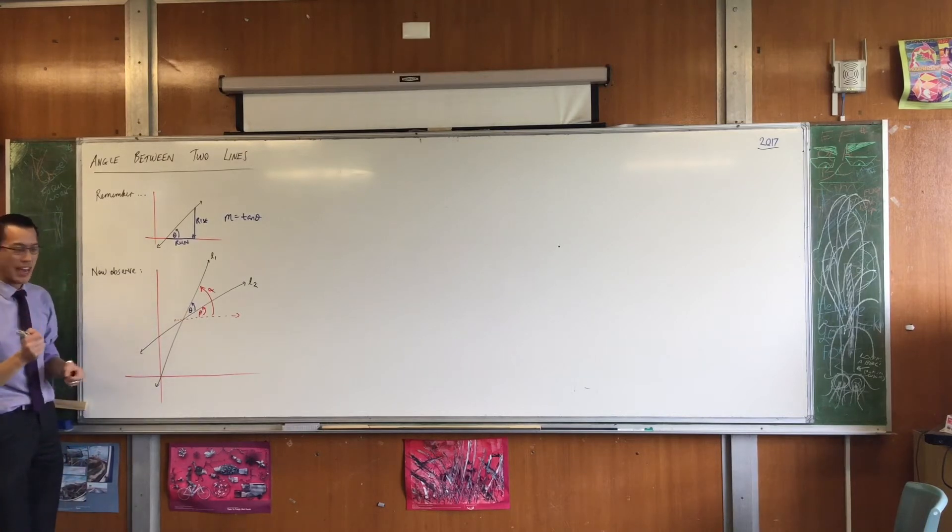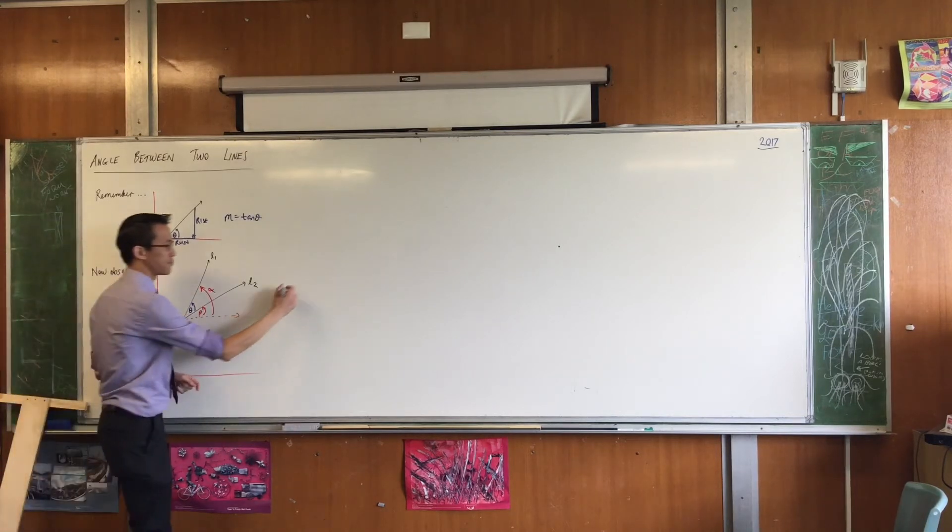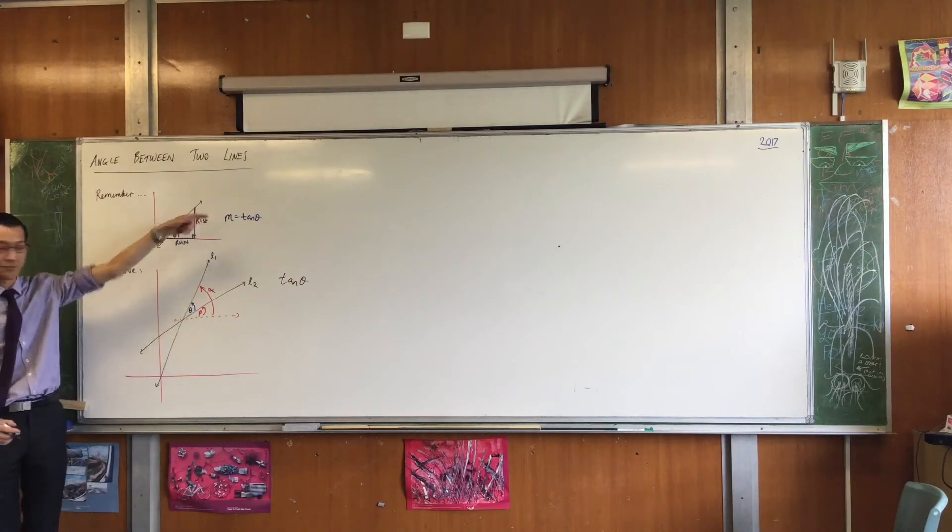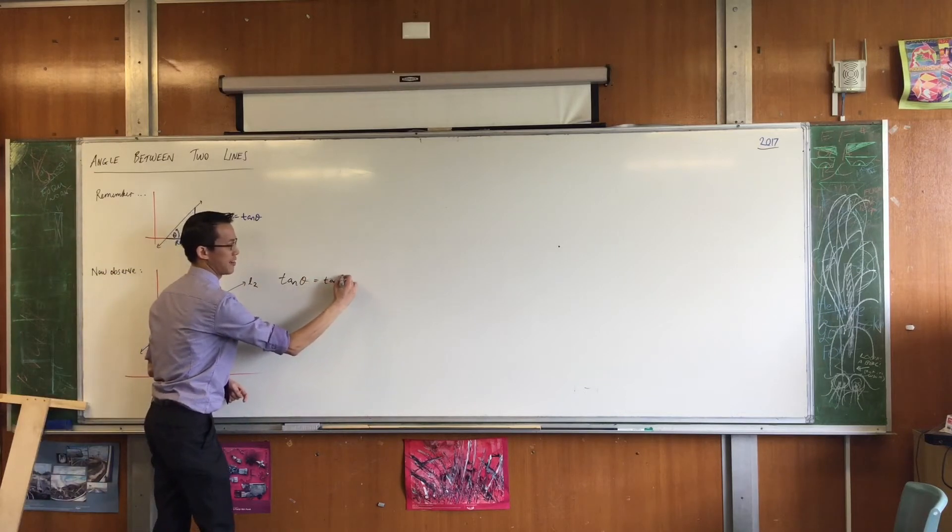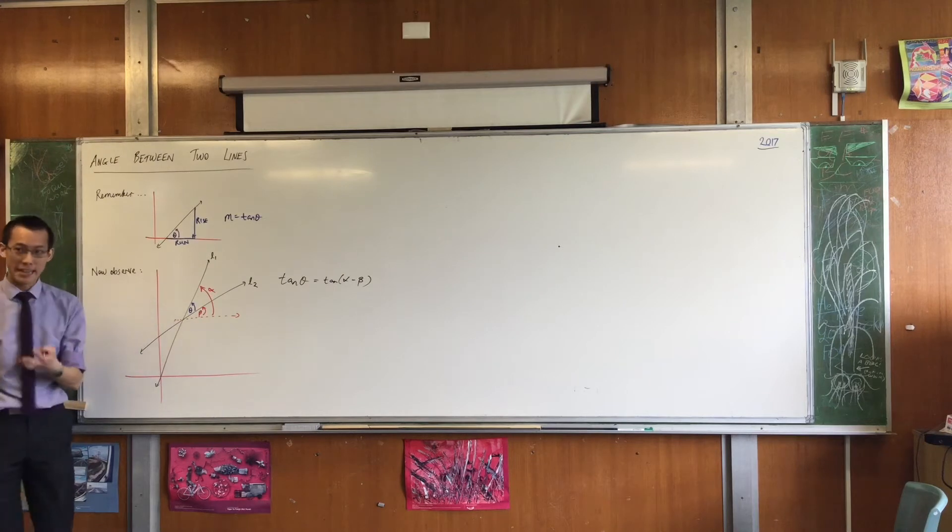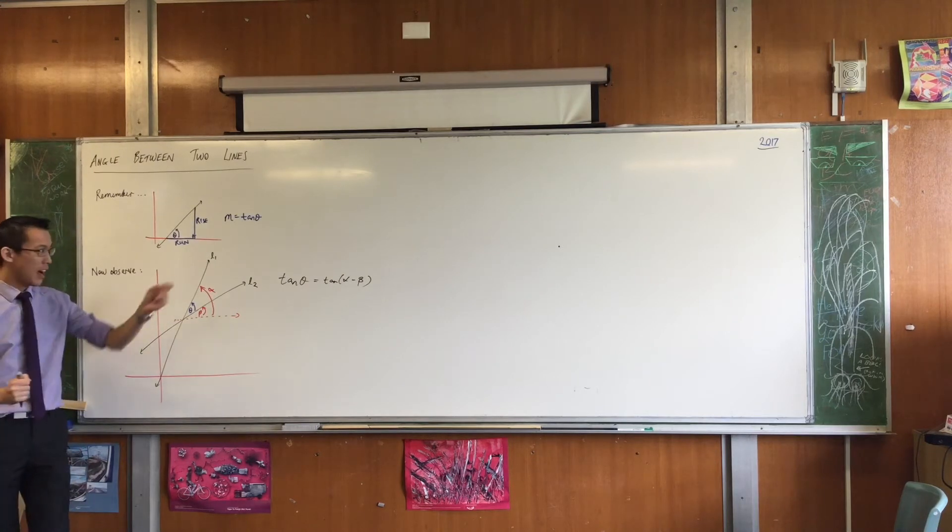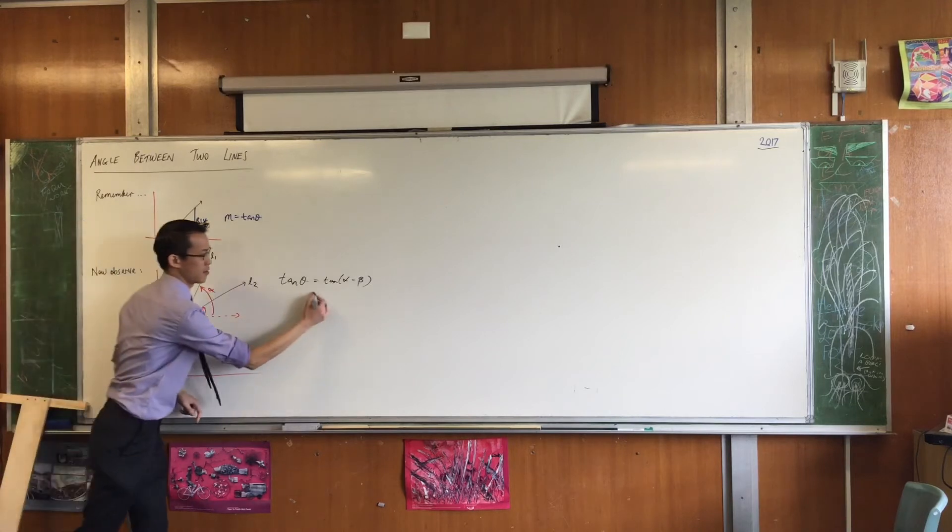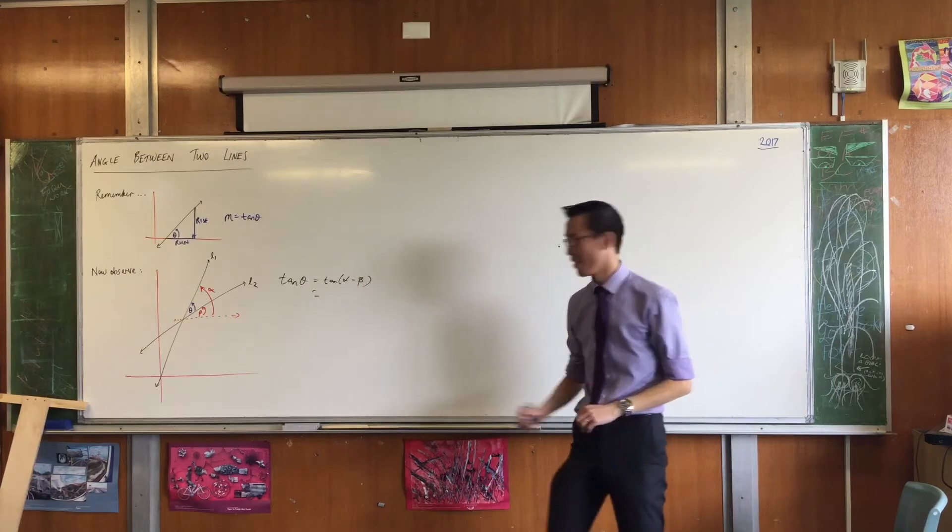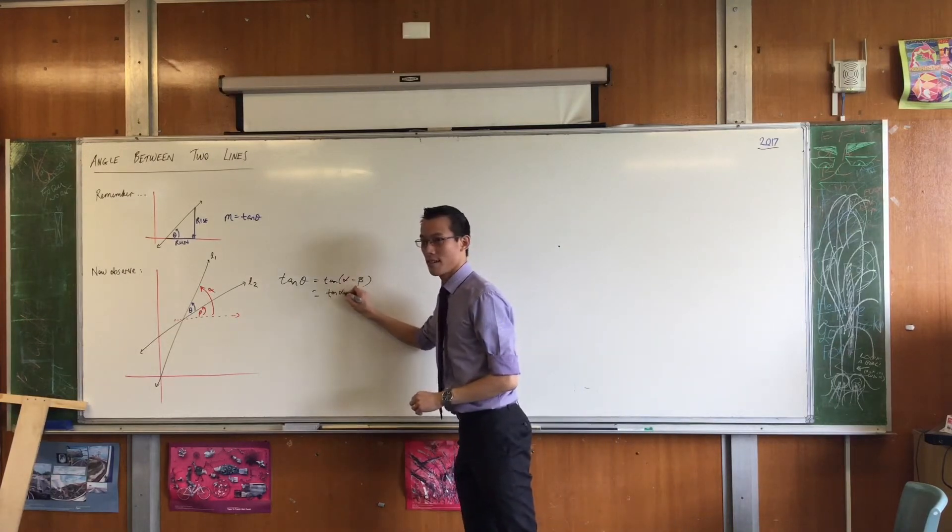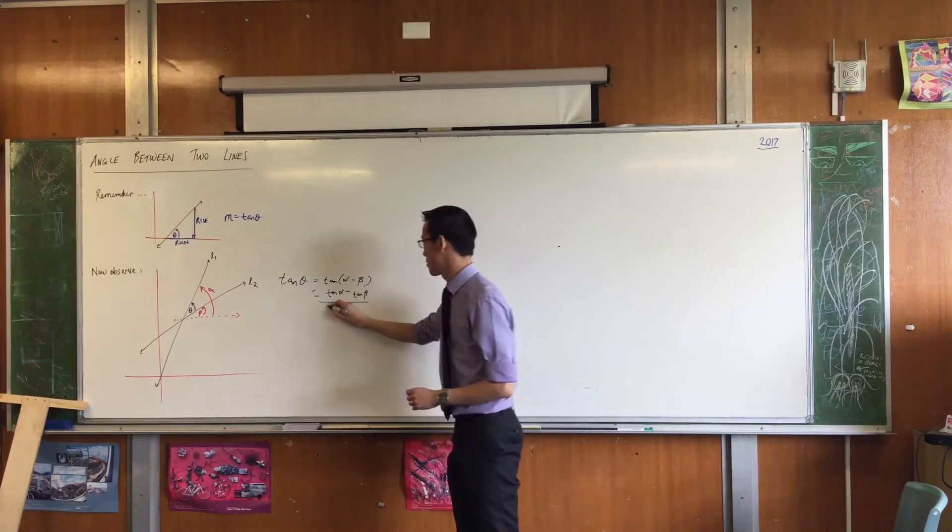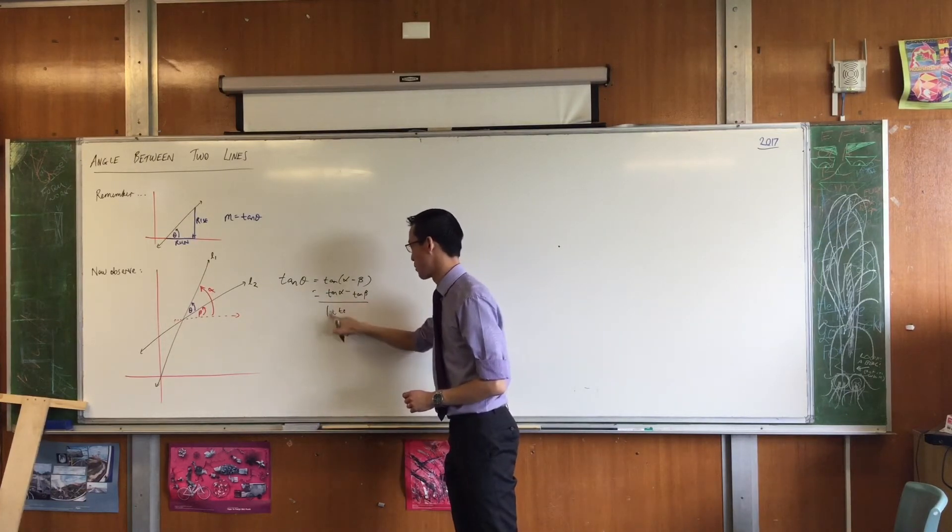So watch. If I just say, if I want theta, I'm going to have to get to there through tan, okay, just like I did up here. Tan theta is equal to, by definition, tan alpha minus beta. That's what you told me to compare, right? But now, after this morning, I have an expansion for this, right? What's our expansion for the difference of angles when it comes to tan? Do you remember? Tan alpha minus tan beta, and then over one plus tan alpha tan beta.